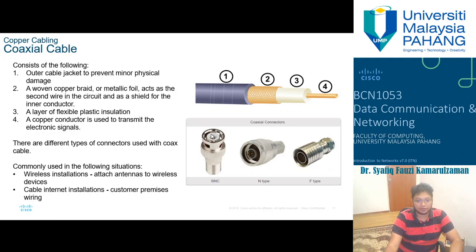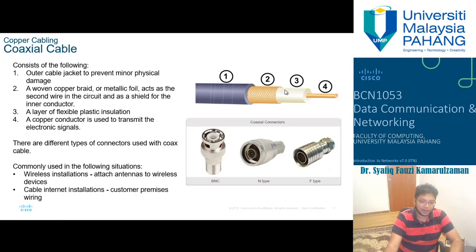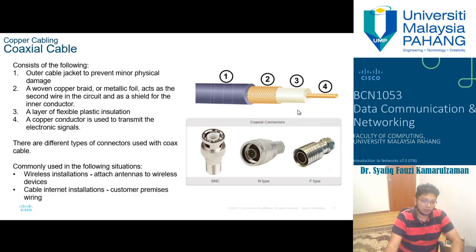Coaxial cable consists of an outer jacket to prevent physical damage, a braided metal shield to provide protection from EMI and RFI, plastic insulation to keep the core undisturbed from any interference, and a copper core that transmits the electrical signal. This type is used for large networking devices, and for intercity networking equipment — they use coaxial connectors rather than the conventional connectors you have in your PC.